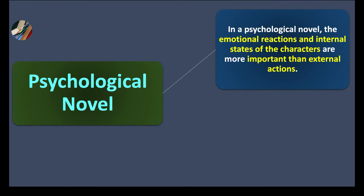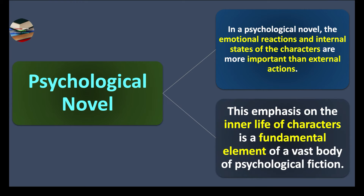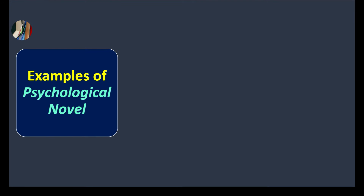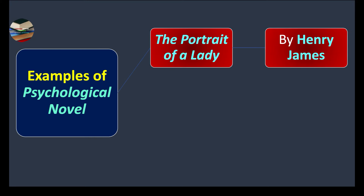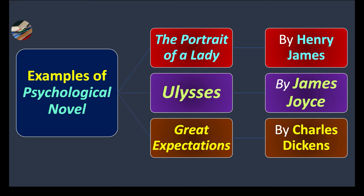In a psychological novel, the emotional reactions and internal states of the characters are more important than external actions. Though internal states do impact external behavior, the focus is on the inner life of the mind. This emphasis on the inner life of characters is a fundamental element of psychological fiction. Examples include The Portrait of a Lady by Henry James, Ulysses by James Joyce, and Great Expectations by Charles Dickens.